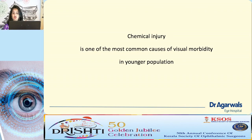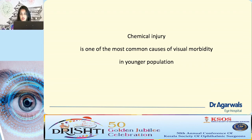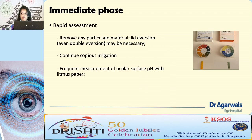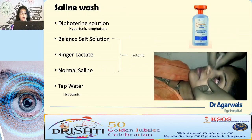Chemical injury is one of the most common causes of visual morbidity in younger patients, and it is up to us to manage within those first 24 hours to safeguard vision. Whenever a patient presents with chemical injury, we do not waste time taking history or clinical examination — the patient has to be immediately made to lie down, any particulate matter should be removed on lid eversion and double eversion, and a thorough saline wash has to be given.